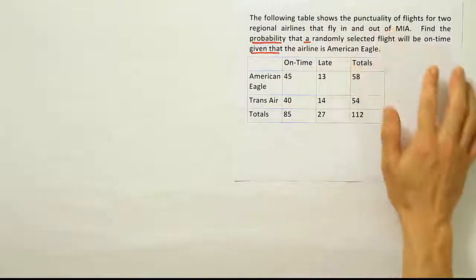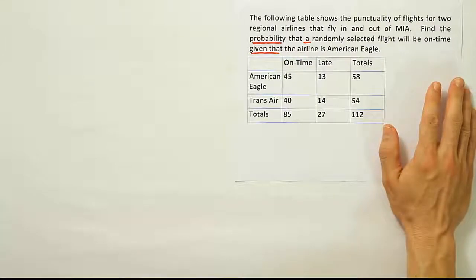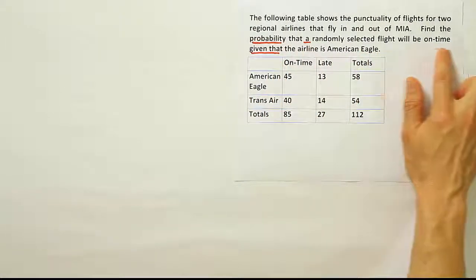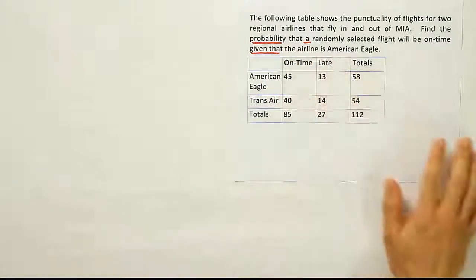The following table shows the punctuality of flights for two regional airlines that fly in and out of MIA. Find the probability that a randomly selected flight will be on time given that the airline is American Eagle.